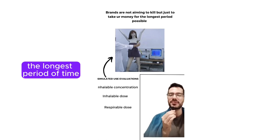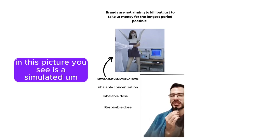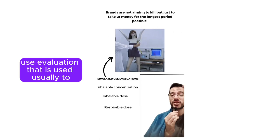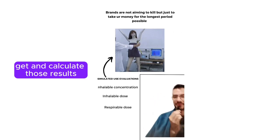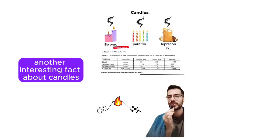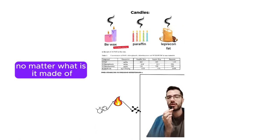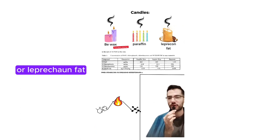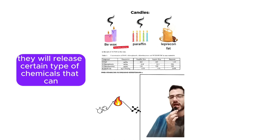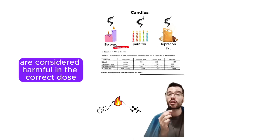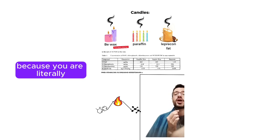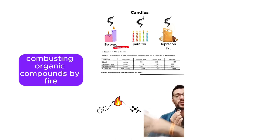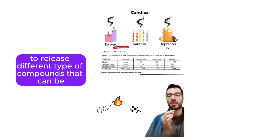In this picture you see a simulated use evaluation that is usually used to get and calculate those results. Another interesting fact about candles: no matter what they're made of - bee wax, paraffin, or leprechaun fat - they will release certain types of chemicals that are considered harmful in the correct dose, because you are literally combusting organic compounds by fire to release different types of compounds that can be harmful, again, in the correct dose.